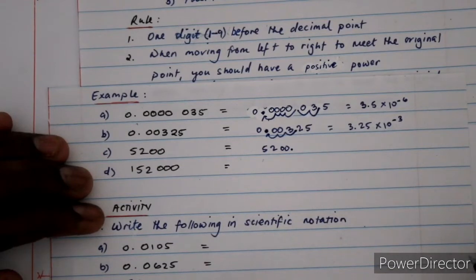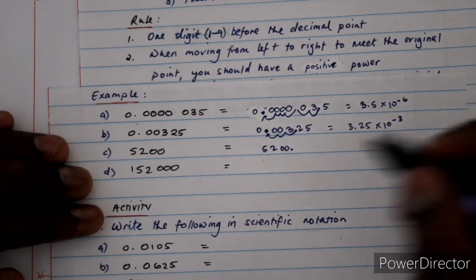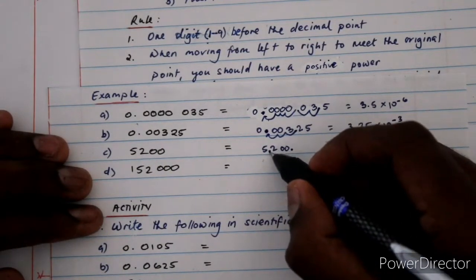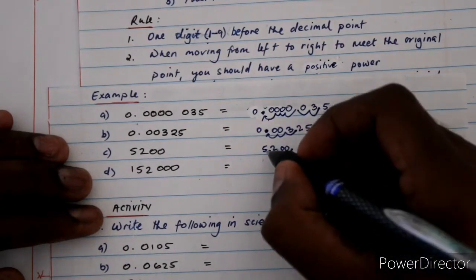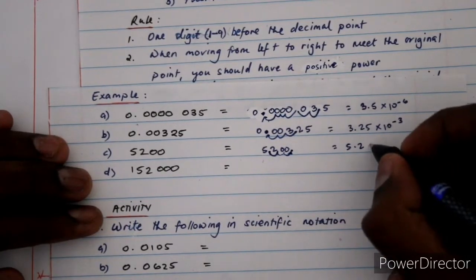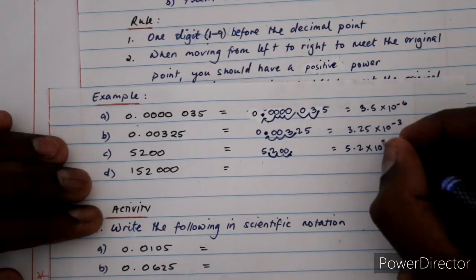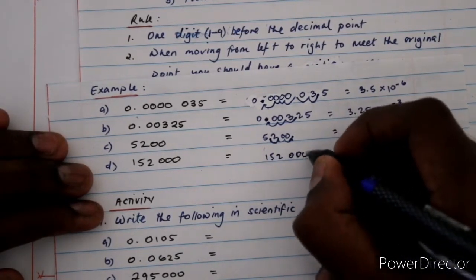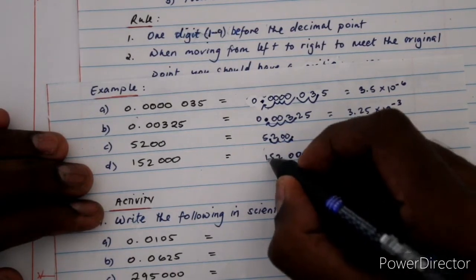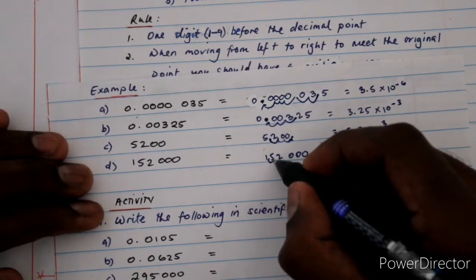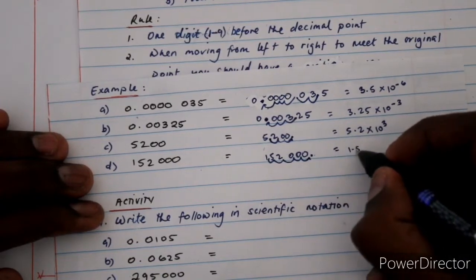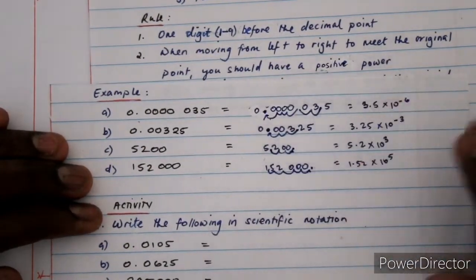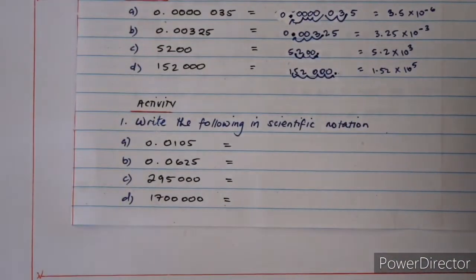For 5200, the original decimal point is at the end. We place the new decimal point after the 5 to get one digit before it, giving 5.2. Moving from the new decimal point to the original point goes left to right: 1, 2, 3 places — left to right means a positive power, so we get 5.2 times 10 to the power of positive 3. For 152000, placing the decimal point after the 1 gives 1.52. Moving left to right: 1, 2, 3, 4, 5 places, so the result is 1.52 times 10 to the power of positive 5.